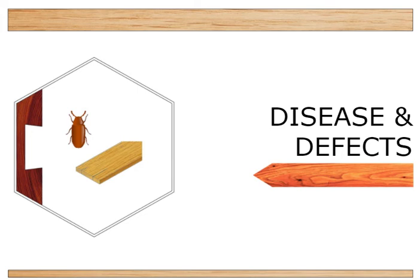We'll make a start. We're going to look at diseases and defects. In the last two chapters we looked at the conversion of timber, which is basically cutting a tree into logs and then into planks of wood. Then the last chapter we looked at was seasoning — how we dry out the planks. The next thing we're going to look at is how different diseases and defects affect the wood and how it makes it harder for us to use them. There's quite a bit to this chapter, so we'll probably do the first half today and the other half next week.